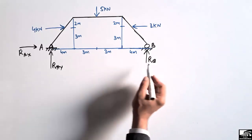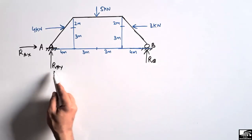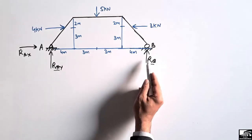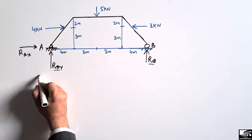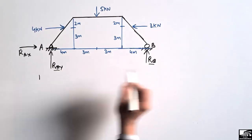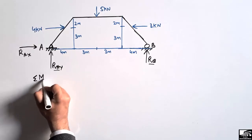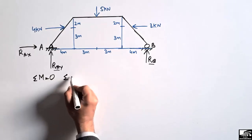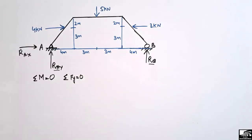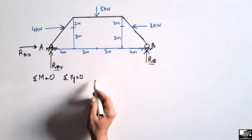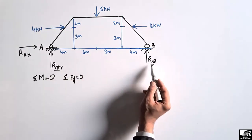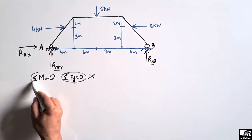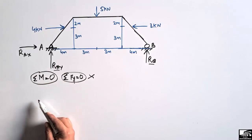Now, to find out the support reactions, we are first interested in finding R_AY and R_B, as these are the vertical reactions for this frame. To find R_AY and R_B we use the summation of moments equation at any point equal to zero. Since we have two unknowns, R_AY and R_B, we cannot use the summation of forces equation alone.